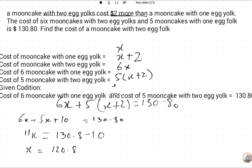The answer will be 10.98. So this is the price of a mooncake with one egg yolk.